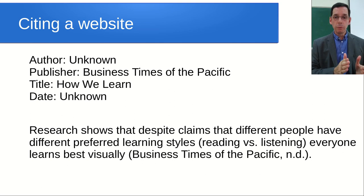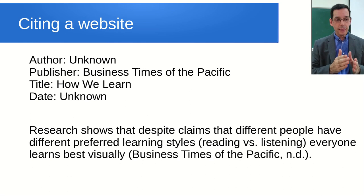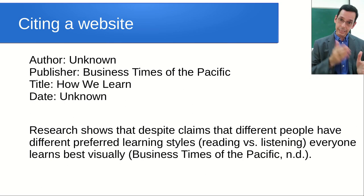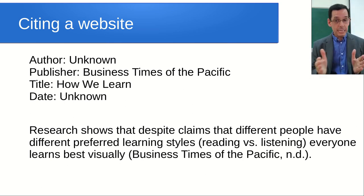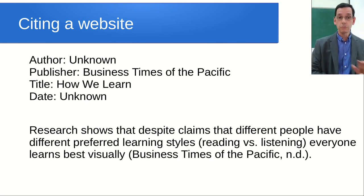If we don't know the date, we write 'n.d.' - and it's important that we have both dots. The dot means letters have been taken out. 'N' is for 'no' - the 'o' has been taken out, so we put a dot after the N. 'D' is for 'date' - the 'a,' 't,' 'e' have been taken out, so we put a dot. So: 'n.d.' If you just write 'n.d' without the final dot, it means 'no D' and that doesn't make any sense. You want to show that you understand the rules of citation.